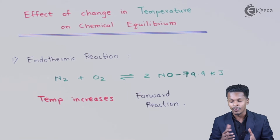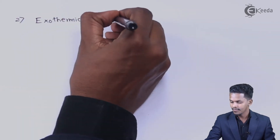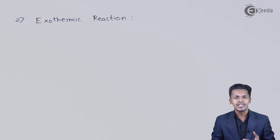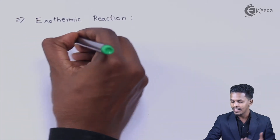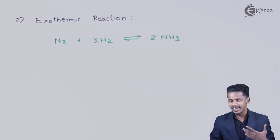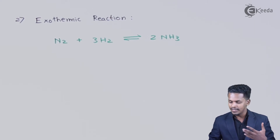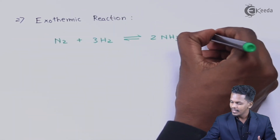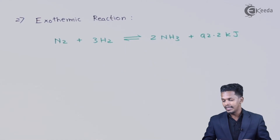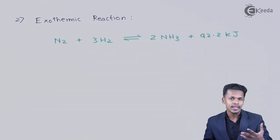Now let's look at what happens when we alter the temperature for an exothermic reaction. Exothermic reactions are those in which heat energy is evolved when the reaction occurs. One example is the formation of ammonia: N₂ plus three moles of H₂ gives two moles of NH₃. Since it is a reversible process, the equilibrium symbol is used here.